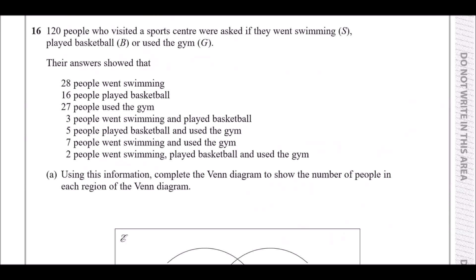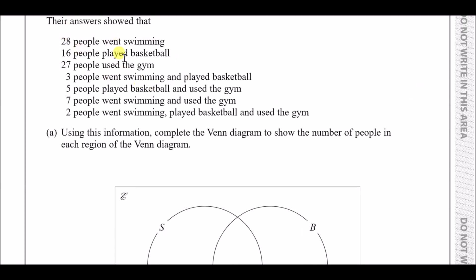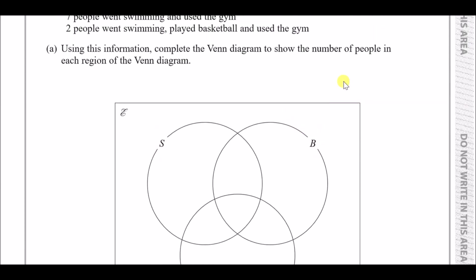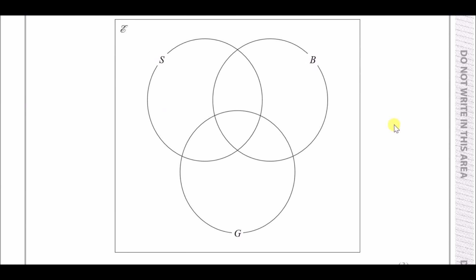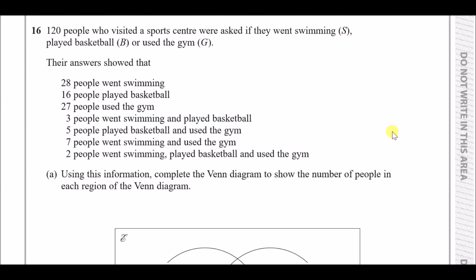Number 16: 120 people were asked if they went swimming, played basketball, or used the gym. Using the given information, complete the Venn diagram. The strategy is to always work out the innermost region first — all three activities — then two-activity overlaps, then individual elements.